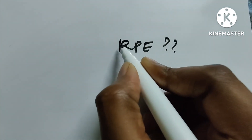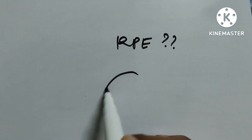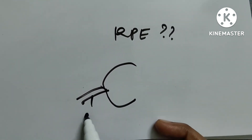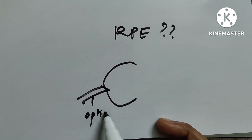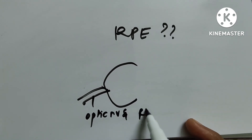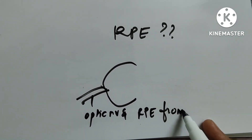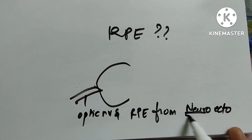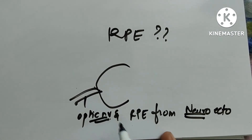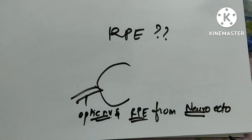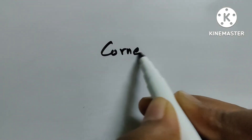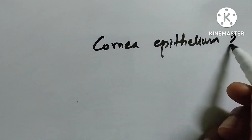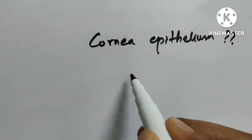The final rapid fire question is about RPE — retinal pigment epithelium. Imagine the picture drawn in pink. Retinal pigment epithelium is from the pink part, which is the inside — the neuroectodermal part. Towards the surface was the surface ectoderm; towards the inside is neuroectoderm. So optic nerve and RPE are from neuroectoderm.